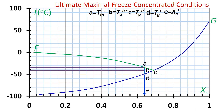C is the hypothetical maximal freeze concentration glass transition temperature Tg'. D is the conceptual maximal freeze concentration glass transition temperature Tg', defined as the vertical line crossing through Tm' to the glass transition line. D is also the conceptual maximal freeze concentration solid Xs', defined as the vertical line passing through Tm' and Tg' and crossing the X-axis.